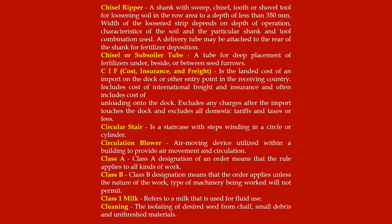Circular stair: a staircase with steps winding in a circle or cylinder. Circulation blower: air moving device utilized within a building to provide air movement in circulation. Class A: a Class A designation of an order means that the rule applies to all kinds of work. Class B: a Class B designation means that the order applies unless the nature of the work or type of machinery being worked will not permit.